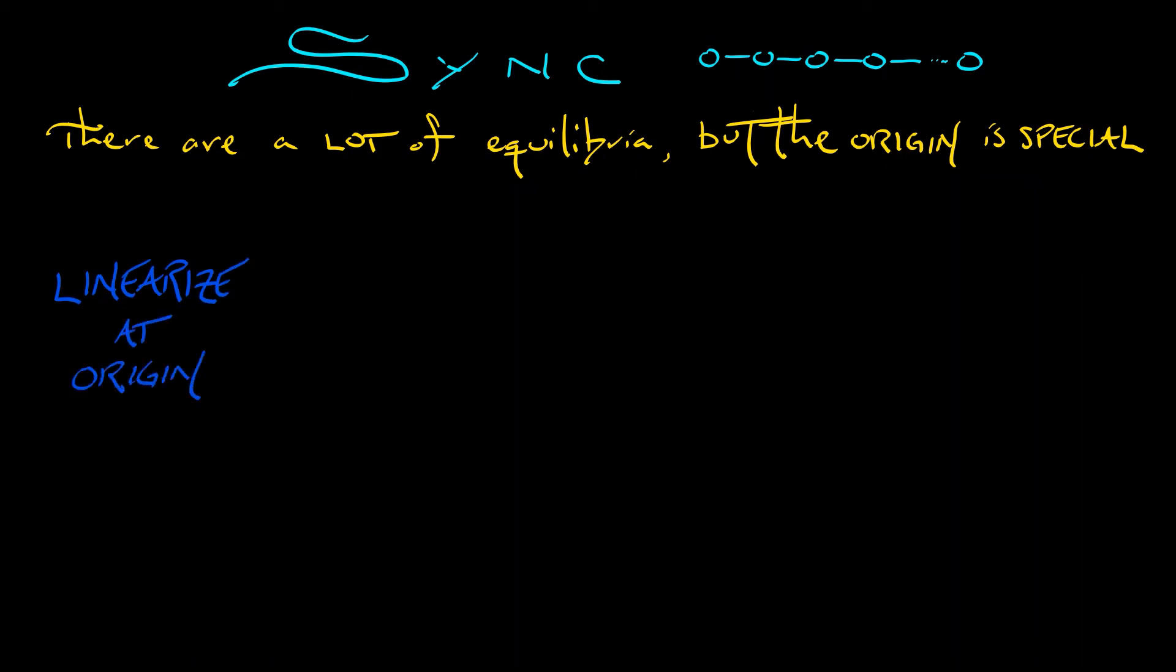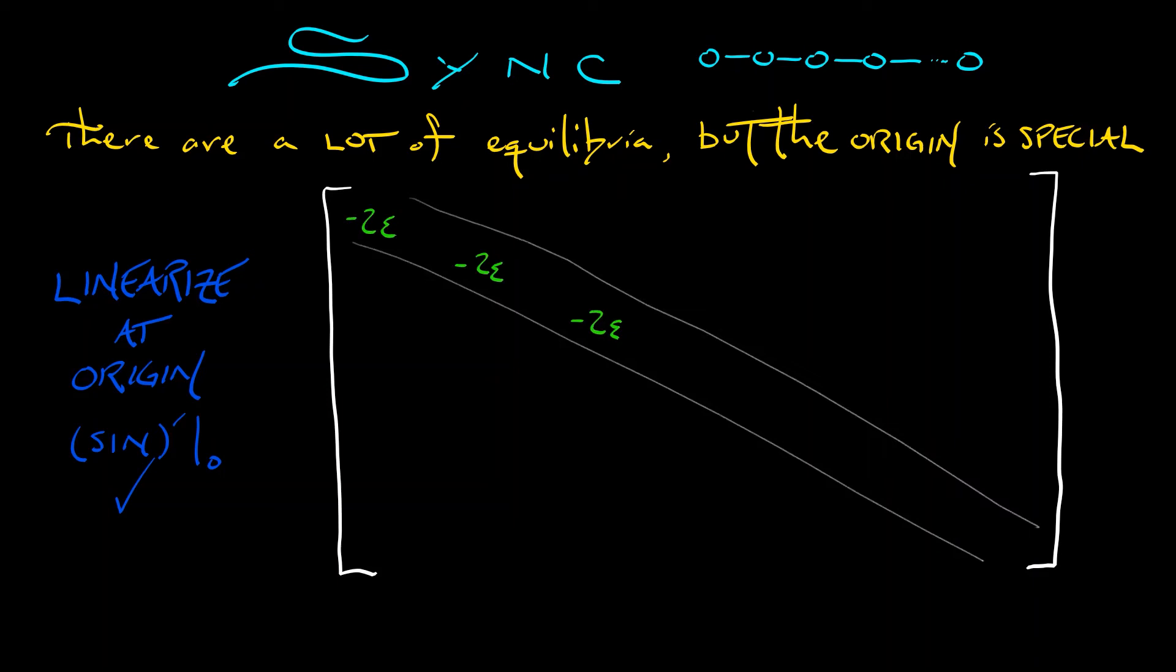So if we take that system, linearize at the origin, using the fact that the derivative of sine at zero is just giving us that linear term, then we can see, we can pull out from this system the n by n matrix. This is going to have a very special form. Along the diagonals, you're going to get minus 2 epsilon. On the super diagonal and on the sub diagonal, you're going to get positive epsilon. And then everywhere else, you're going to get zeros.